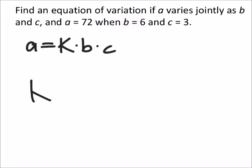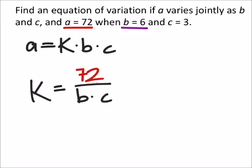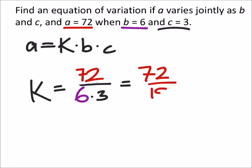And K, as we have already seen, or if we've manipulated that equation, would be A over B times C. And it told us up here at the top that A is 72, B is 6, and then C is 3. So I got 72 divided by 6 times 3 is 18. 4.